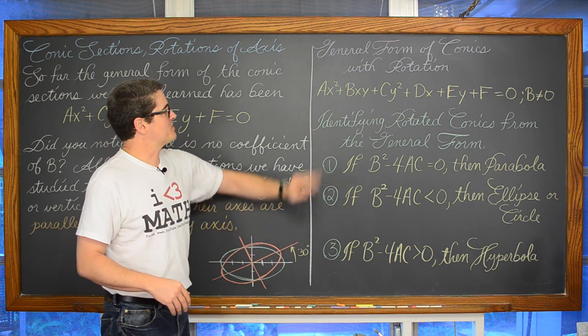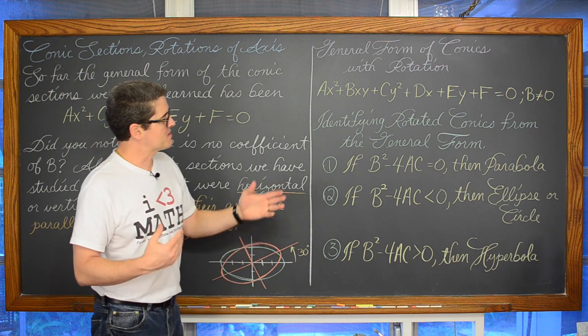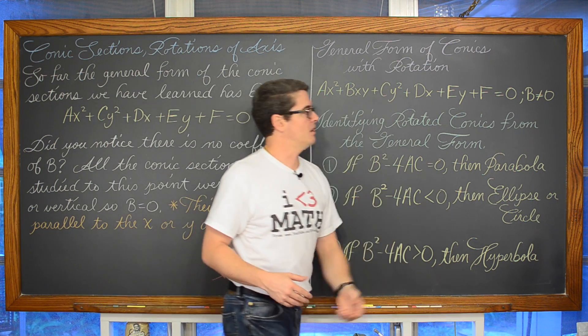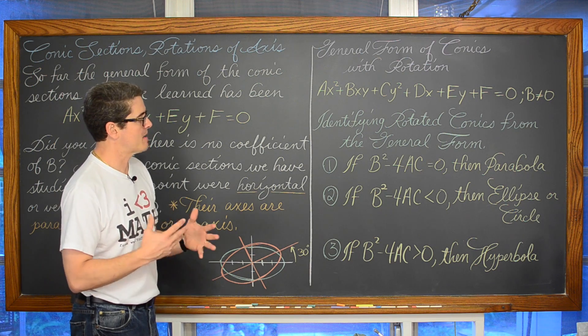General form of conic sections with rotation. Again we are going to have that b times xy term mixed in with the general form that we already know. And b is not going to be equal to zero because all of these examples have some type of rotation to them.